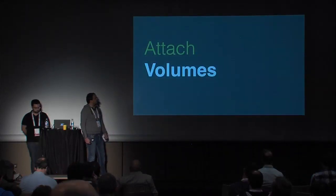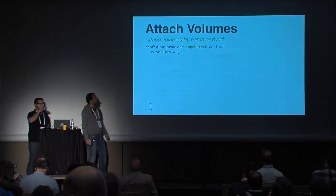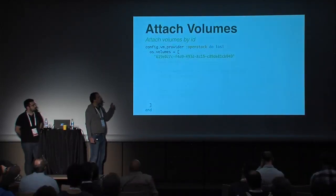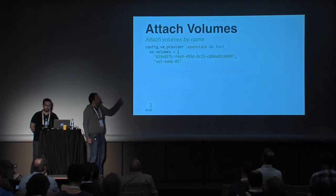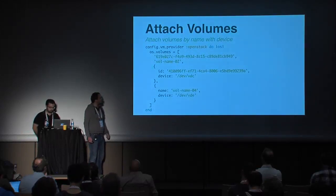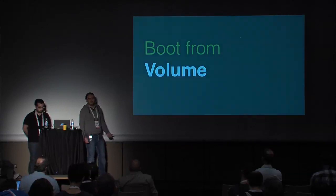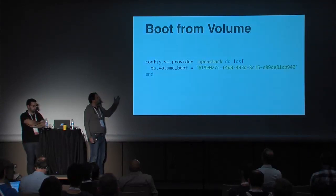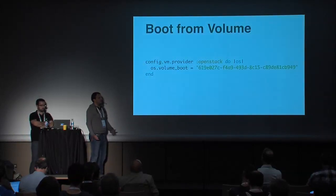The next feature is volume attachment. If you have existing Cinder volumes in your tenant, you can attach them to instances. The configuration is similar to network configuration — you can provide the volume ID or name, and the resolution mechanism is the same. Optionally, you can configure the device name under which the volume will be accessible in the operating system. You can also boot from a volume: instead of specifying 'os_image,' use the 'volume_boot' attribute and specify the ID or name of a bootable volume.